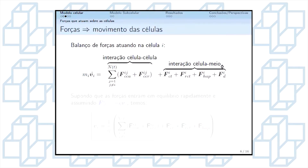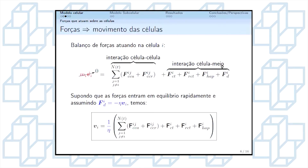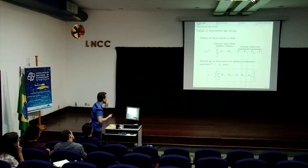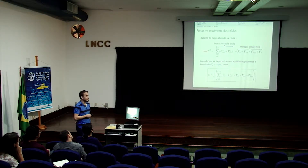Dado as forças, nós definimos o movimento da célula a partir da segunda lei de Newton, onde massa vezes aceleração é igual ao somatório de todas as forças incididas em uma célula i. Consideramos que as forças entram em equilíbrio rapidamente e que a força de arrasto é proporcional à velocidade de cada célula, com a constante de proporcionalidade eta, que representa a permissividade do fluido intestinal. Com isso, obtivemos a velocidade para cada célula i.